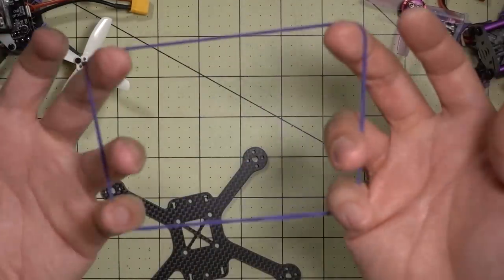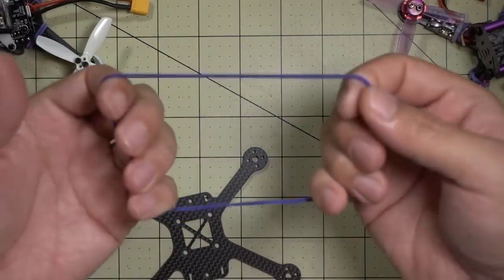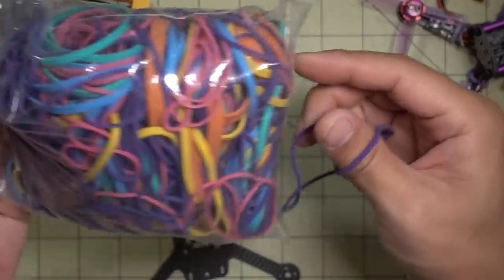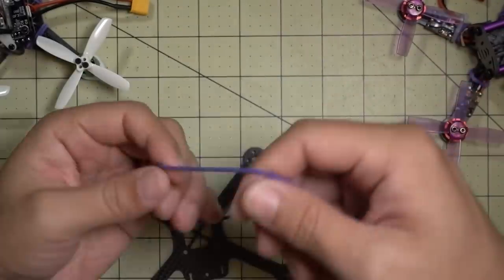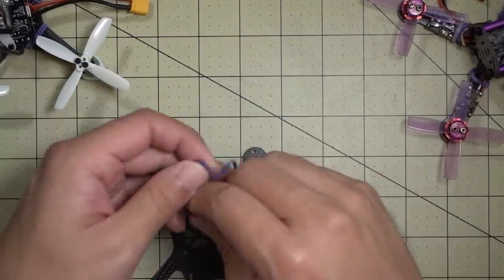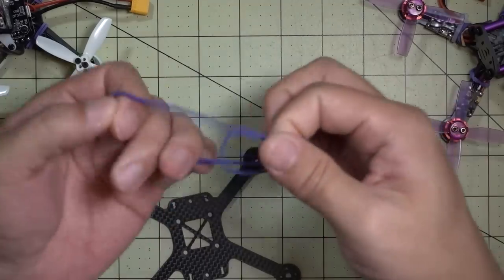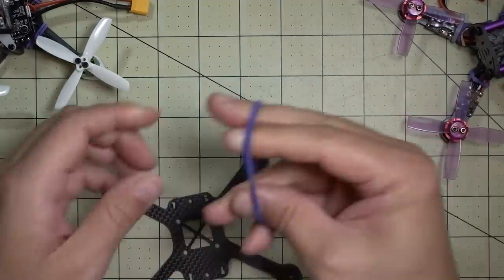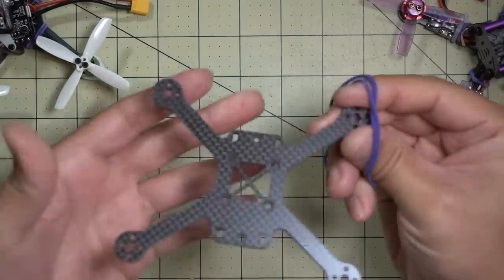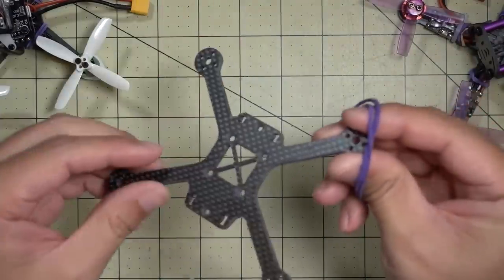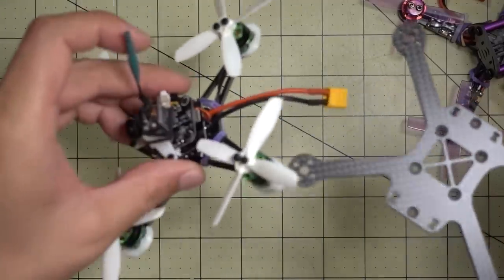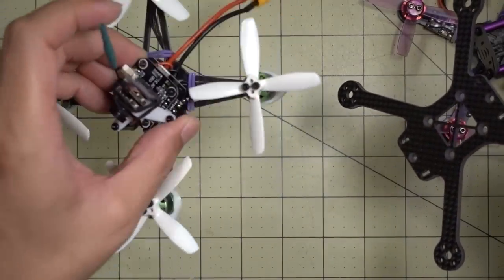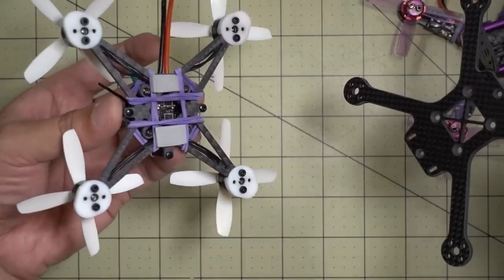So this is the rubber band that I'm using. It's pretty big. I got a bunch of these from the dollar store in an assorted pack for like a buck. Since it's so big, I have it doubled up. I just twist it and double it up like this so I have enough tension. Obviously you probably want to do this without the props on. You can do it with the props on, but it's a lot easier to do without the props.